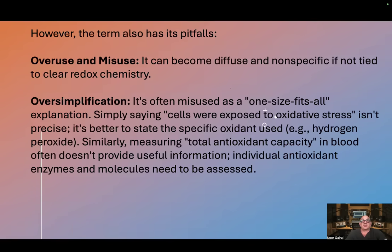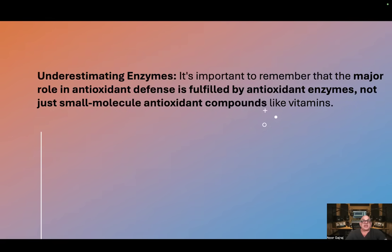However, the term also has pitfalls: overuse and misuse. It can become diffuse and nonspecific if not tied to clear redox chemistry. It's often misused as a one-size-fits-all explanation. Simply saying cells were exposed to oxidative stress isn't precise — it's better to state the specific oxidant used, e.g. hydrogen peroxide. Similarly, measuring total antioxidant capacity in blood is limited. It's important to remember that the major role in antioxidant defense is fulfilled by antioxidant enzymes, not just small molecule antioxidant compounds like vitamins.